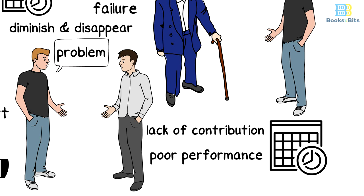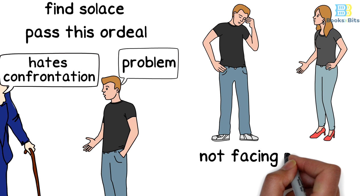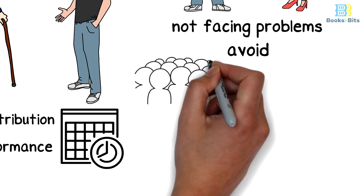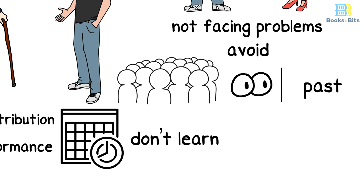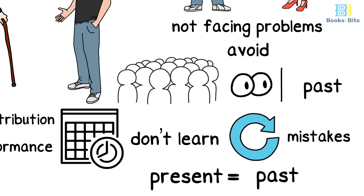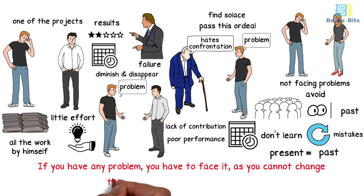Also, this problem was the main reason for his breaking up with his fiancée as he wasn't facing problems and was trying to avoid them. Then the old man told him that many people avoid looking at the past and as a result they learn few things or they don't learn at all and they keep repeating the same mistakes so that their present becomes just like their past. But to remember, if you have any problem you have to face it as you can't change the past but you can learn from it.